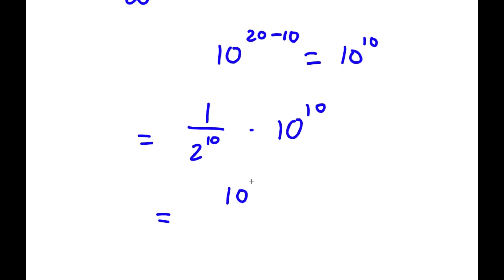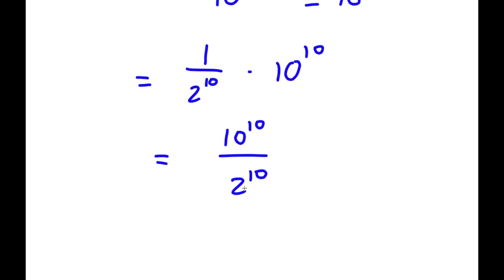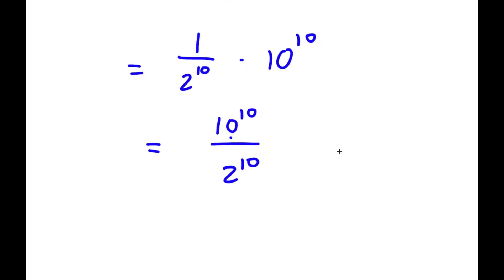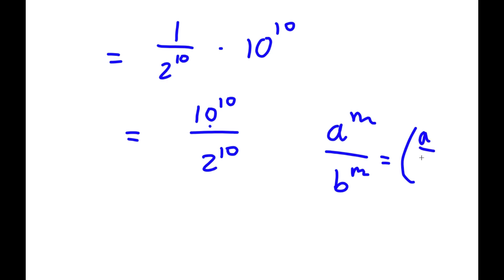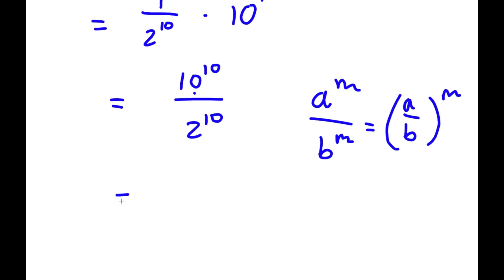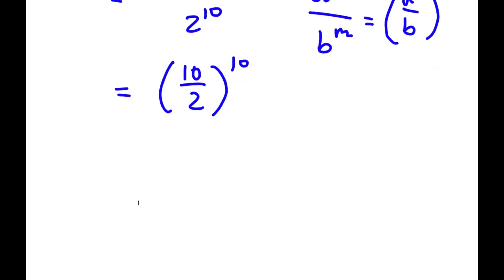Now if I rewrite this, I get 10 to the power of 10 over 2 to the power of 10. And if I have something in the form a to the power of m over b to the power of m, this is equal to a over b to the power of m. So 10 to the power of 10 over 2 to the power of 10 equals 10 over 2 to the power of 10, which is equal to 5 to the power of 10.